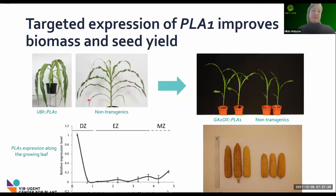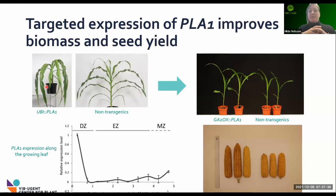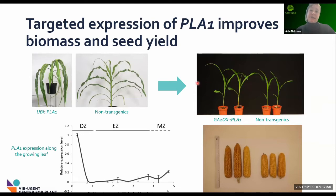When we constitutively overexpressed Plastochrome 1, we saw that leaves became very big, they kept on growing, and the plants failed to flower or to set seeds. So when we then ectopically expressed this gene very locally, we saw an increase in seedling vigor, final biomass, and also seed yield — not only in the greenhouse, but also in field trials.